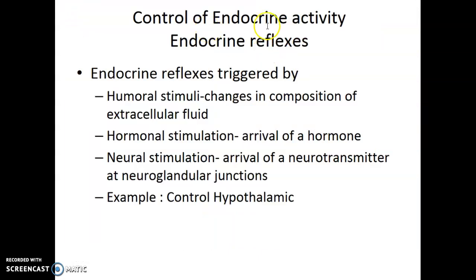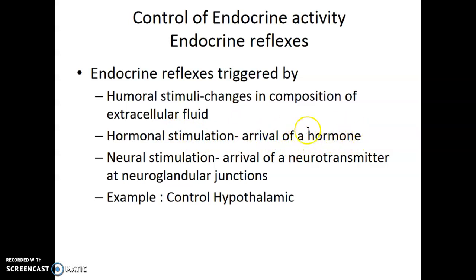Our next topic is controlling endocrine activity through endocrine reflexes — what causes the hormone to be released. We can break it down into three major areas: humoral stimuli (some change in the composition of our extracellular fluid), hormonal stimulation (one hormone triggers the release of another hormone — most anterior pituitary hormones work this way), and neural stimulation (a neuroglandular junction causing a gland to release its hormones).